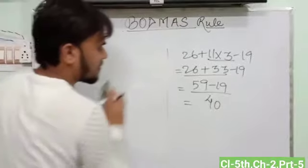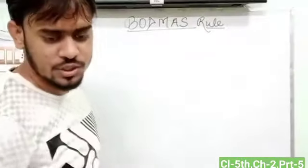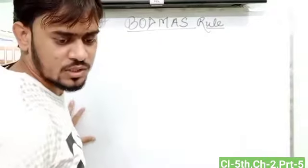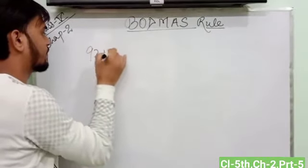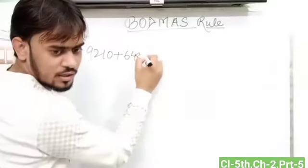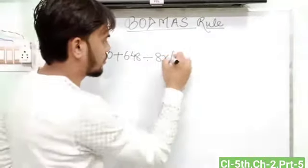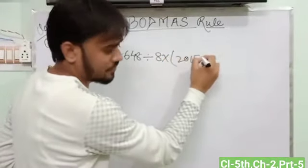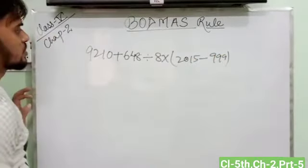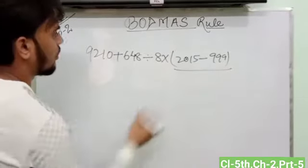I have some complex questions of your exercise 2.7, question 9-2. In another example, 2210 plus 648 divide 8 into bracket 2015 minus 990 close bracket. So first here, there is a bracket.